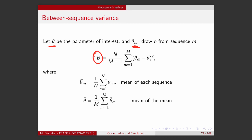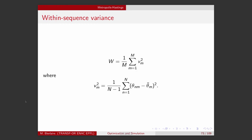So theta bar m is the mean of each sequence, and theta bar is the mean of the means. I can also calculate the variance within each sequence. So this is the deviation from the mean.